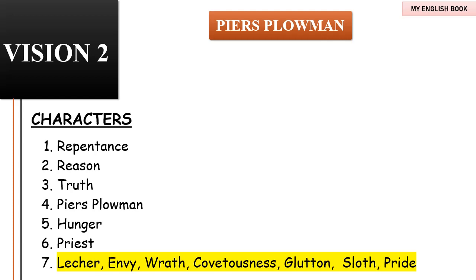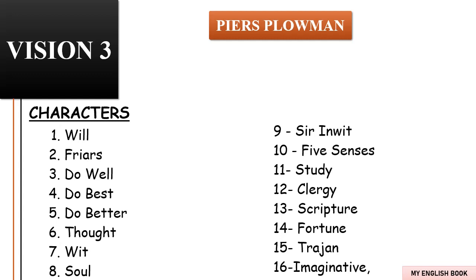Before Vision Three, Will wanders the world thinking about how penance and pardons are helpful for salvation, but that it is better for a Christian to avoid sin and do well. One day he comes across two friars and tries to ask them where he can find Do Well, but the friars are arrogant and claim that Do Well resides permanently with them. Will politely excuses himself, knowing he will learn more by continuing his quest than by listening to the friars.